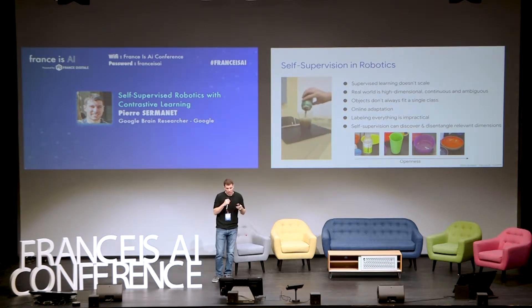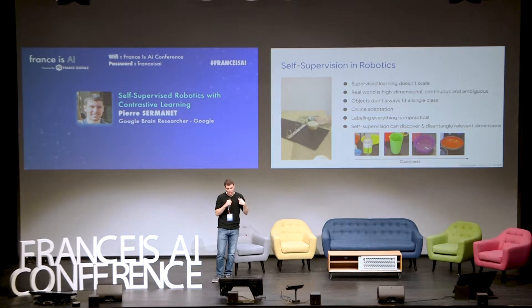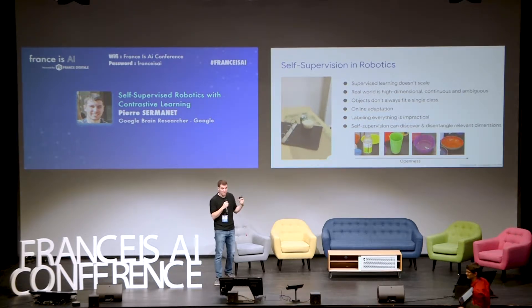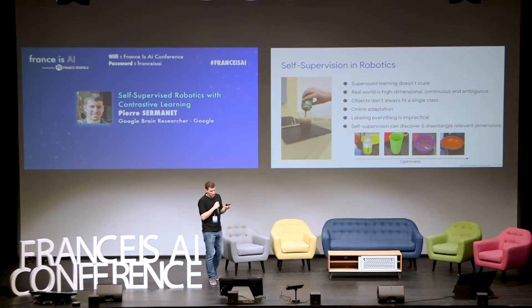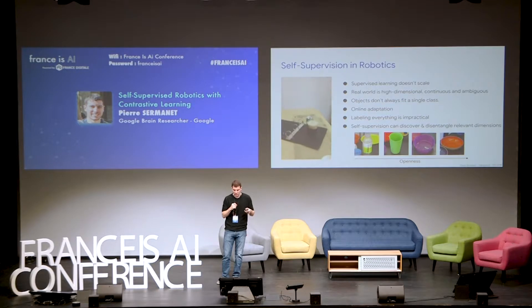Another reason to self-supervise when it comes to objects is that objects don't always fit into one single class — they might be ambiguous, and there might be subtle dimensions that you care about, such as the openness dimension, that maybe humans are not going to label for you. So maybe that's something you want to self-discover. Also, we'd like to do online adaptation without labels, so that robots can be robust to new situations and new objects. Bottom line: it's not really practical to ask humans to label every aspect of every new scene, or to precisely label continuous dimensions. Instead, we want the models to discover and disentangle the abstract dimensions that matter without explicit supervision.